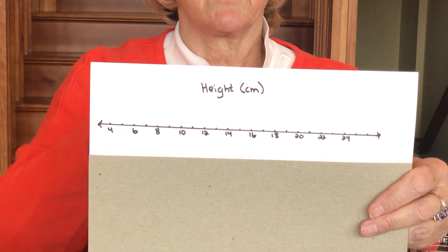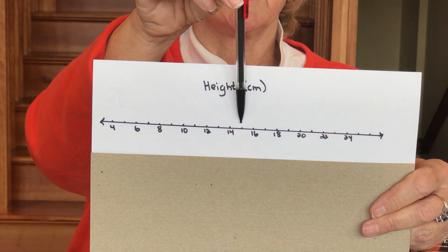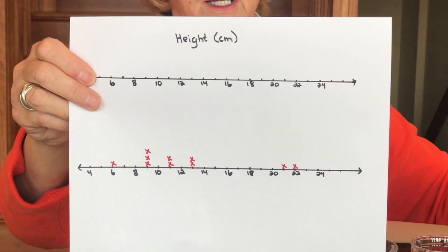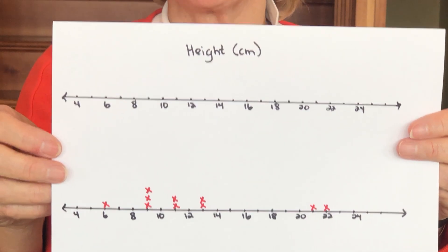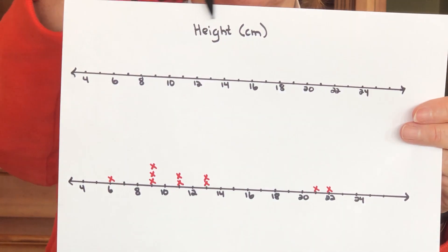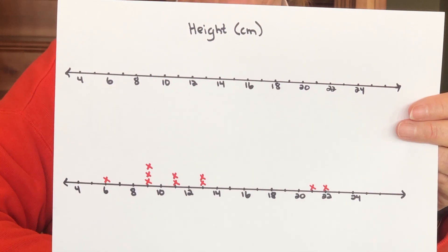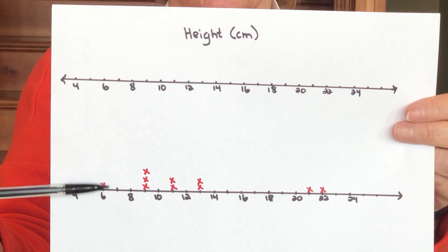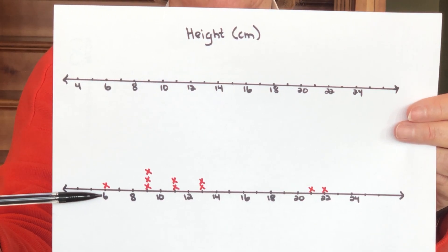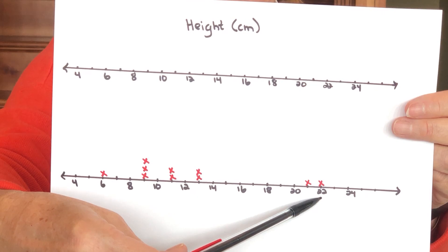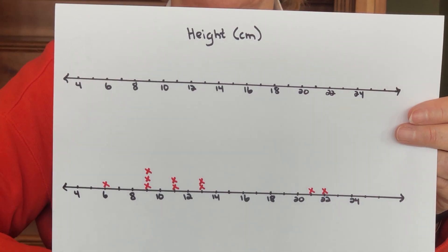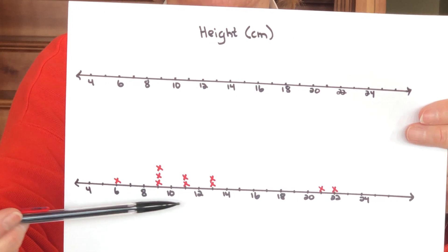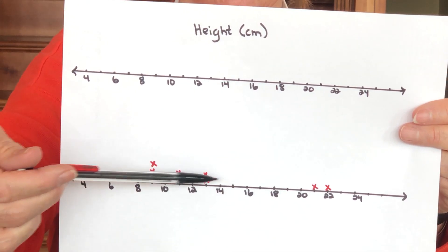Can students still identify where the number 15 would be? Can they still identify where 21 would be? I've now measured in centimeters, and this is what my plot looks like — it has similar attributes to the previous graph. The shortest is at 6 centimeters; two wine glasses were 21 and 22 centimeters tall; and there's still this cluster in the middle — seven glasses measured between 9 and 13 centimeters tall — and again there's still a gap in the data.